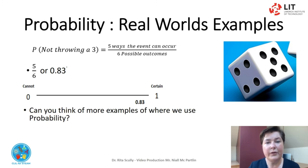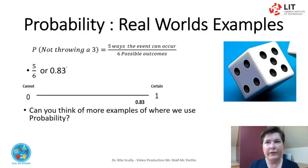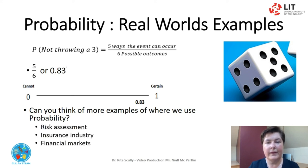Can you think of some more examples of where we can use probability? Probability is used in everyday life in risk assessment and modelling the potential of risks or events occurring. The insurance industry and financial markets use probability in determining the risk level of an event.